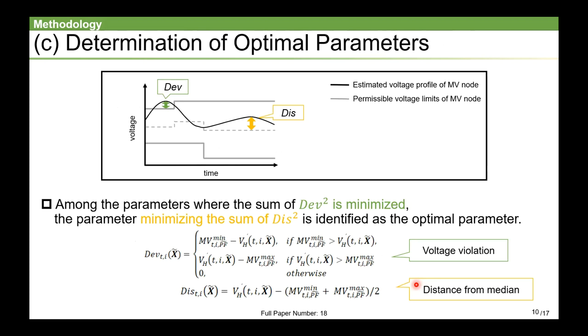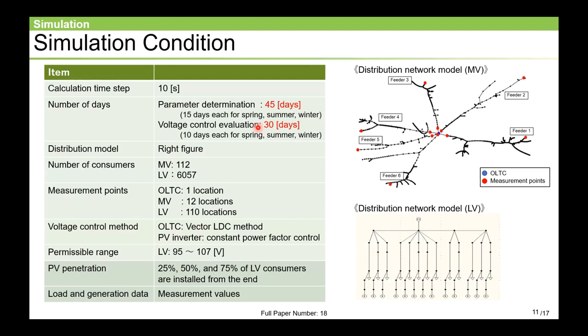This slide is about the last step of proposed method. In step C, we calculate the amount that the estimated voltage violates the permissible voltage range. The optimal parameter is what minimizes the sum of squares of div. If there are multiple combinations that take the minimum value, we calculate the distance from the median of permissible voltage range like this. And the combination that minimizes the sum of squares of this is identified as the optimal parameter. This is an explanation of the proposal method.